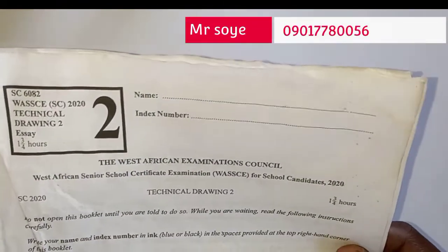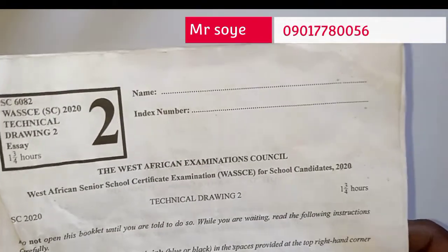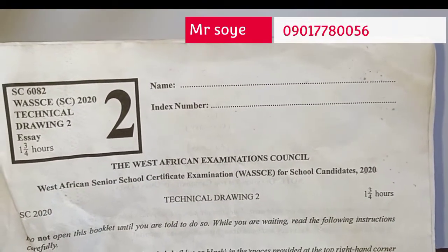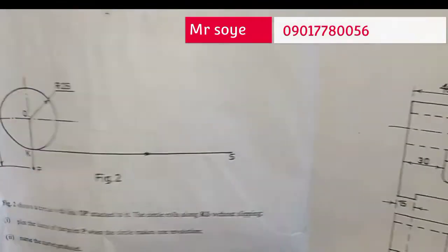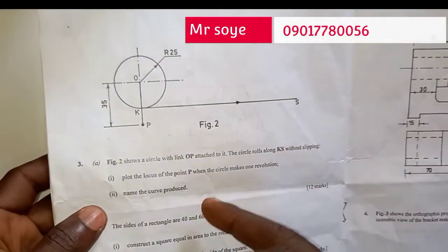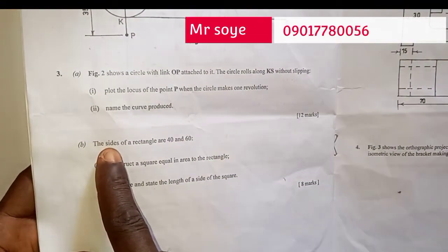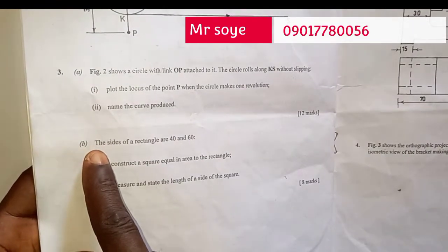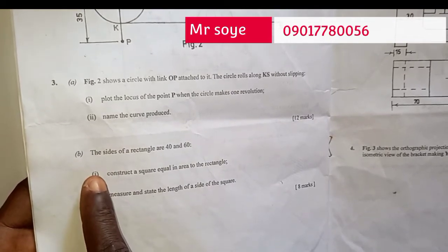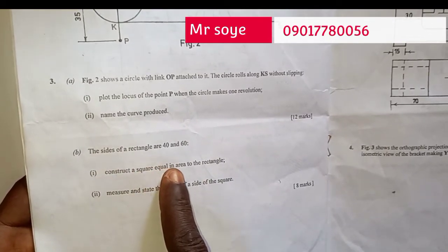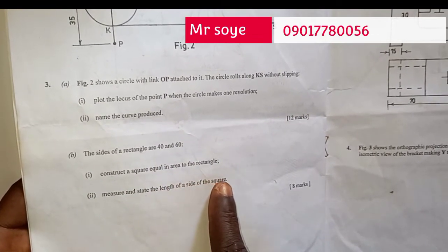Let's look at further questions in technical drawing SA-2 for the year 2020. We've done 3A, now we'll move to 3B. Question 3B says: the sides of a rectangle are 40 and 60. Number one, construct a square equal in area to the rectangle. Number two, measure and state the length of a side of the square.